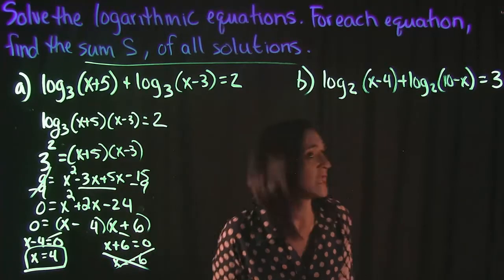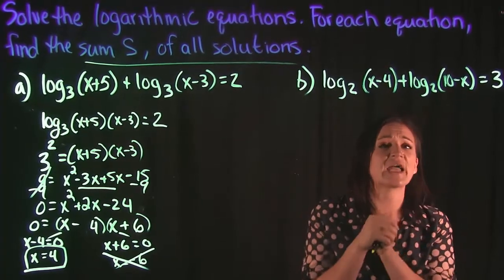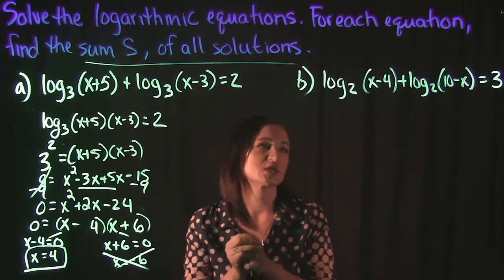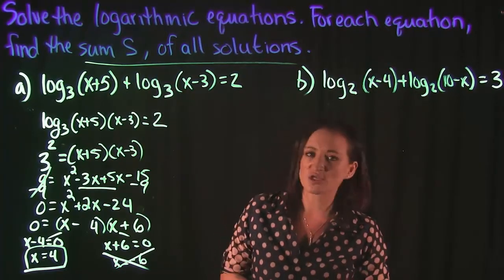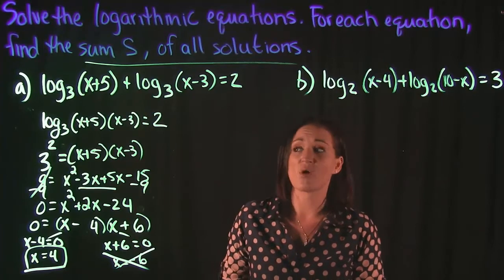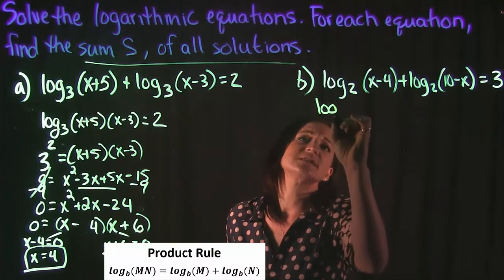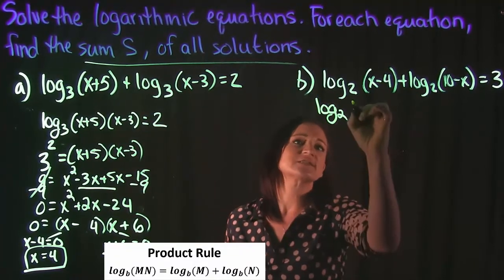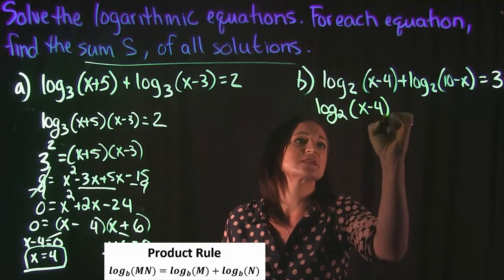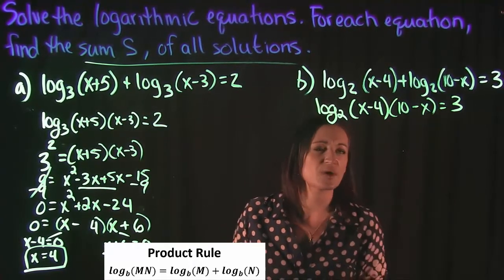Moving on to example B, it looks like we also have our logs together on the left hand side of the equation, so that's good. We have an addition going on between these two logs, so that also correlates to the product rule. I'm going to condense these two, bring them together by using the product rule for logs that says we can just multiply these together: x minus 4 times 10 minus x equals 3.